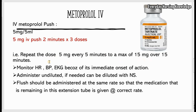Before giving each dose, you must monitor the heart rate, blood pressure, and EKG. Because of its immediate onset of action, you can push the medicine undiluted. If needed, it can be diluted with normal saline. Once the medication is pushed, you must flush with normal saline, and that flush should also be administered at the same rate — 5 mL over 2 minutes — so that the medication remaining in the extension tube is also given at the correct rate.